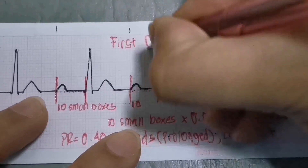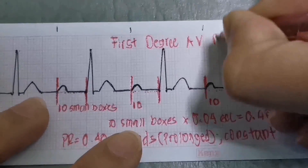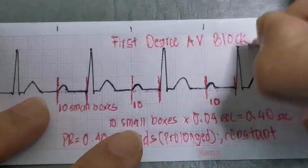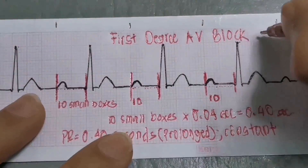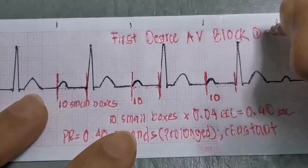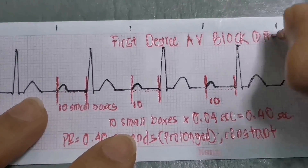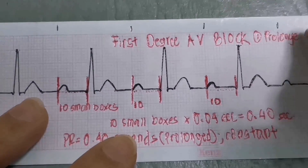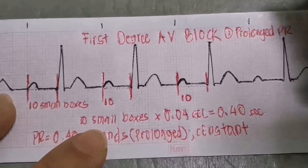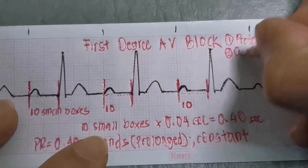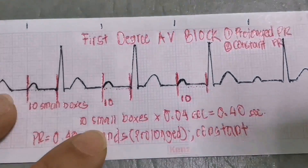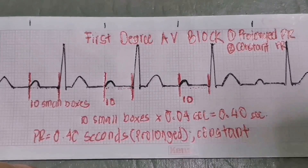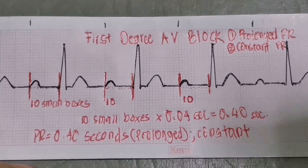We conclude that this rhythm is first-degree AV block. There is a prolonged PR interval, and the PR interval is constant in the remaining beats.